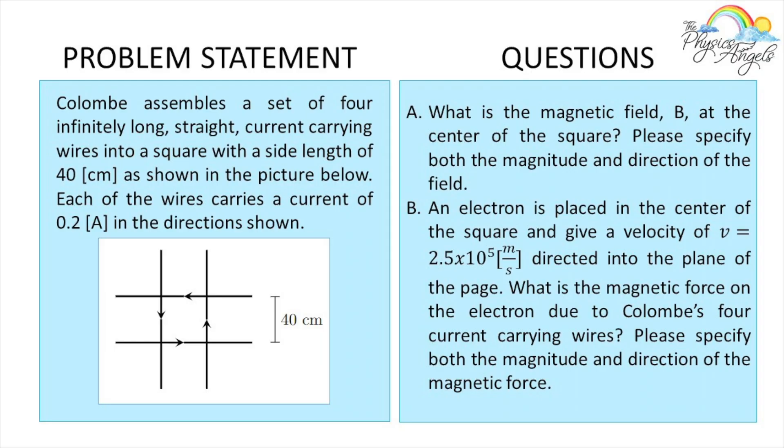So this is the problem that we're going to be working on today. Kolom assembles a set of four infinitely long straight current carrying wires into a square with a side length of 40 centimeters as shown in the picture below. Each of the wires carries a current of 0.2 amps in the direction shown.